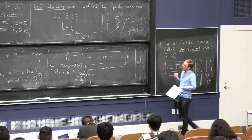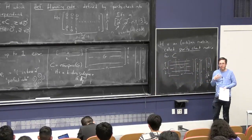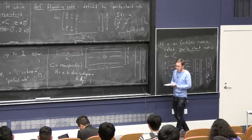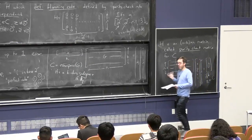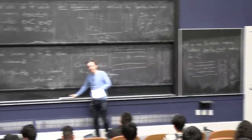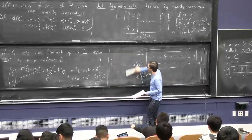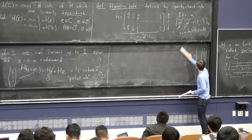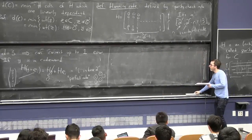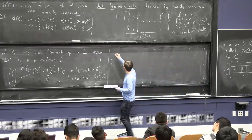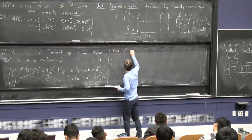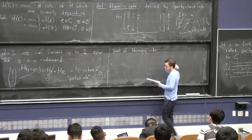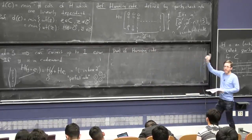So let's now see an example of a code with just the opposite properties, like amazing distance and terrible rate. And then eventually we'll see some codes where both properties are good. So the dual of the Hamming code that we just saw is sort of, by definition, the one that has this H as its generator matrix.